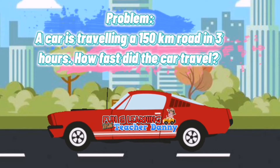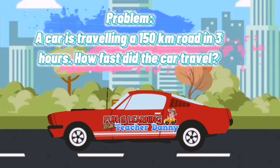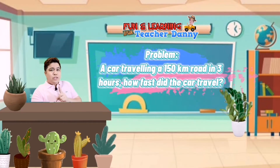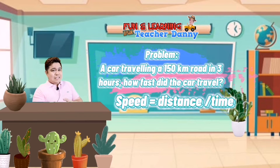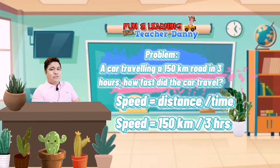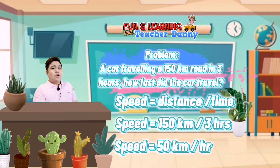Now let's try to solve this problem. A car traveling a 150 kilometer road in 3 hours — how fast did the car travel? In order to solve this, we determine the distance and the time. Speed is equal to distance divided by time. The distance is 150 kilometers and the time is 3 hours. We divide 150 by 3. Therefore, the speed of the car is 50 kilometers per hour.